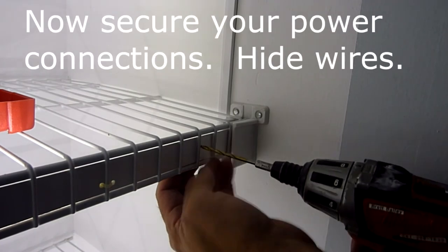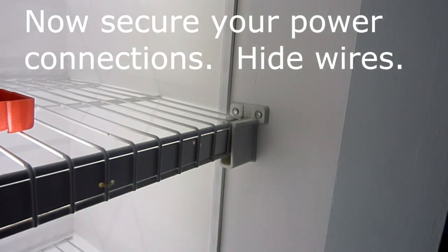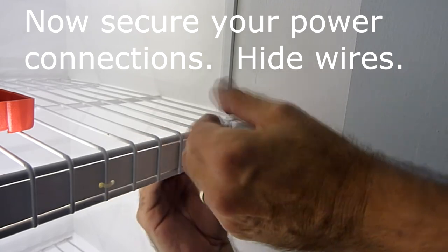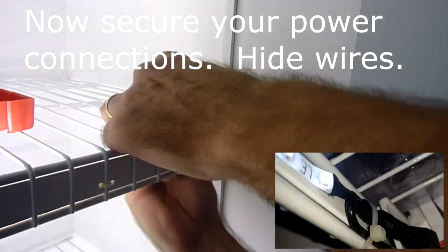Once you have the shelves installed and the lights plugged in, you need to go ahead and secure the wires at the plug. Just bundle up any extra wire there and put a zip tie on it.